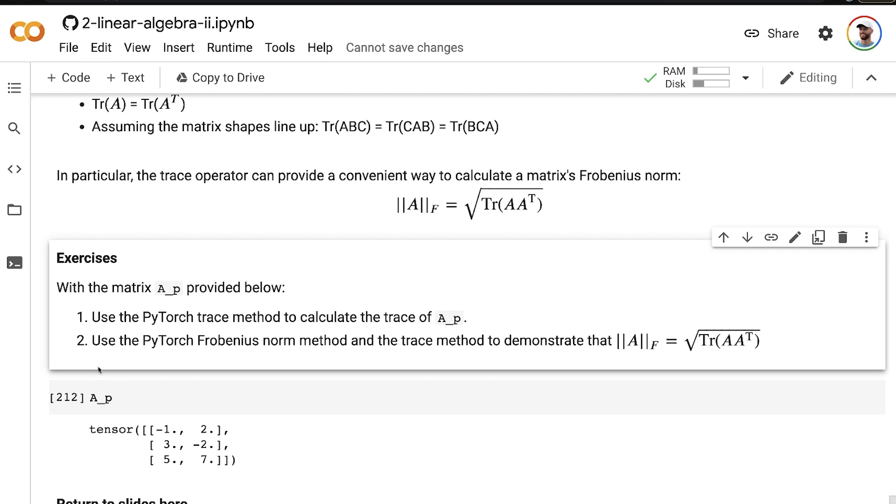So you should now have under your belt all of the PyTorch theory that you need to calculate both the left-hand and the right-hand side of this equation, confirm that they are equal to each other, and the only things that you'll need to look up that we haven't covered before are the PyTorch trace and Frobenius norm methods. All right, I'll leave you to it.